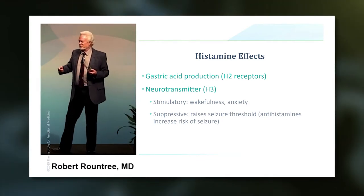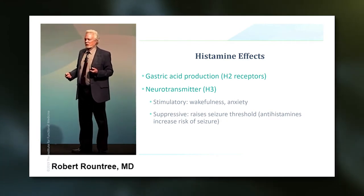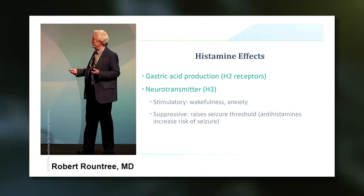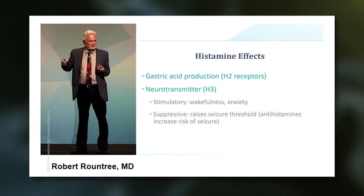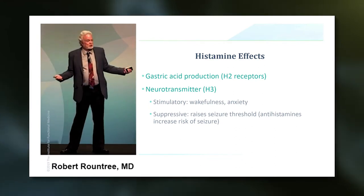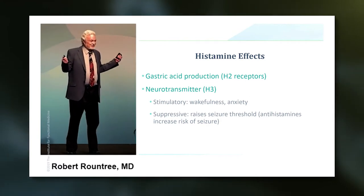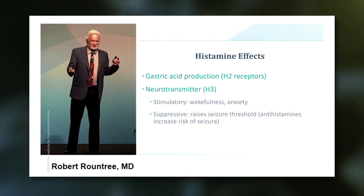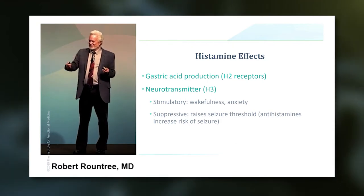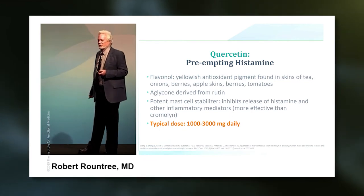That is because histamine is also a neurotransmitter — just like serotonin is a neurotransmitter and an inflammatory mediator, and substance P is both an inflammatory mediator and a neurotransmitter. If you have too much histamine in the brain acting as a neurotransmitter, it makes the person anxious. That's why we sometimes use hydroxyzine, an antihistamine, as an anti-anxiety agent. That kind of overlap is really pretty unique in nature.